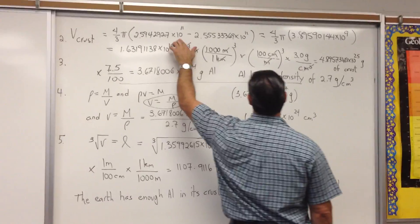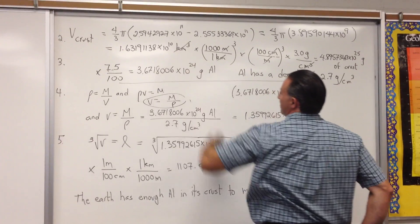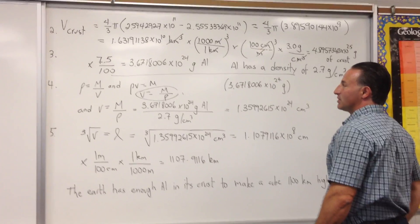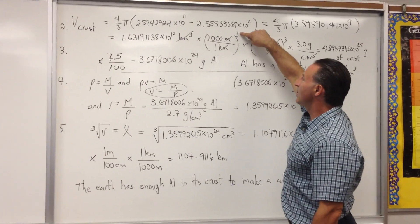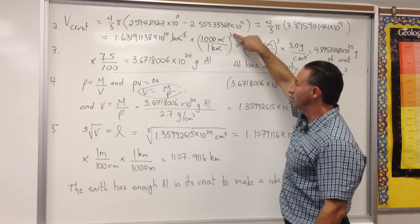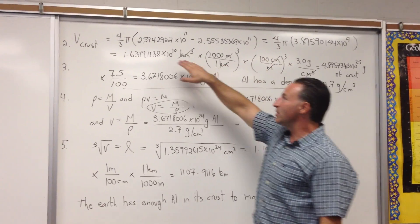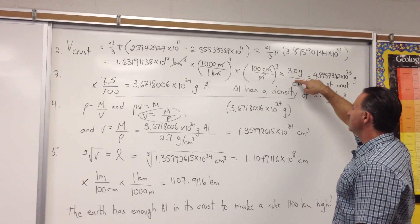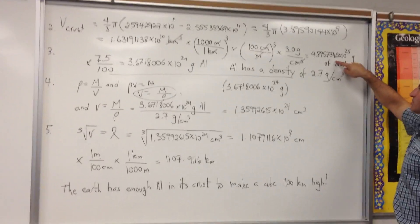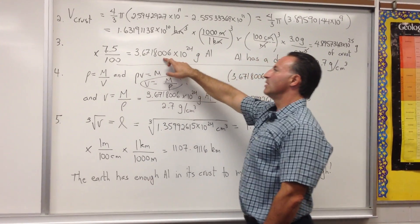We'll continue the calculation. I've turned the R1 and R2 into their actual numbers by entering them in my calculator. I subtracted it, multiplied it by 4 over 3 pi, and I get 1.63 times 10 to the 10 kilometers cubed. That's the volume of the Earth's crust. I then multiply it by 1,000 meters per kilometer to convert kilometers cubed into meters cubed. I also raised the conversion factor to a power of 3 because it's a volume conversion. I've raised it to the power of 3 to turn it into centimeters cubed. Now I've turned this number of kilometers cubed into centimeters cubed. I then multiply it by the density of the Earth's crust on average, and I have the mass of the Earth's crust in grams. Now I take that mass, multiply it by 7.5%, and it gives you the mass of aluminum in the Earth's crust.